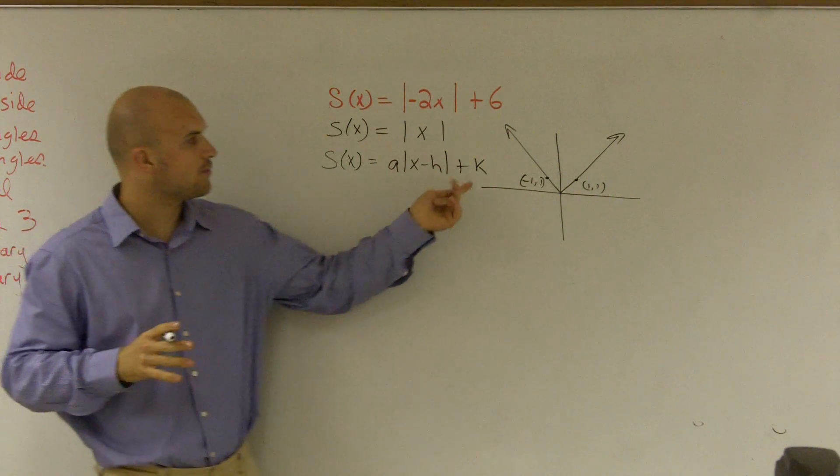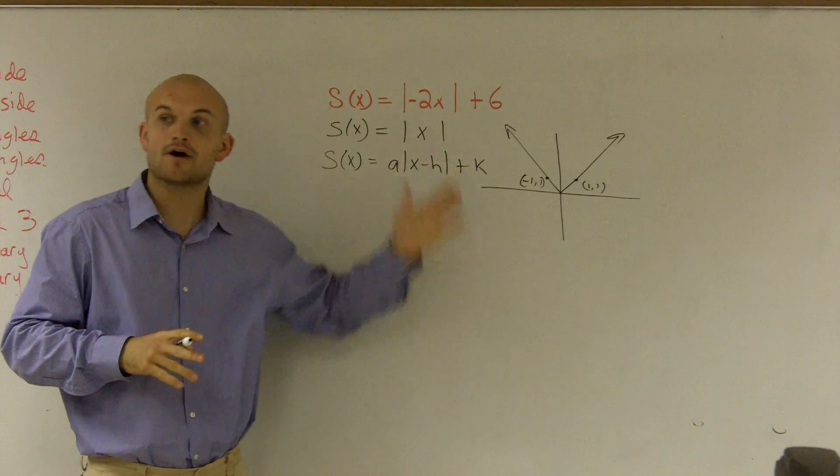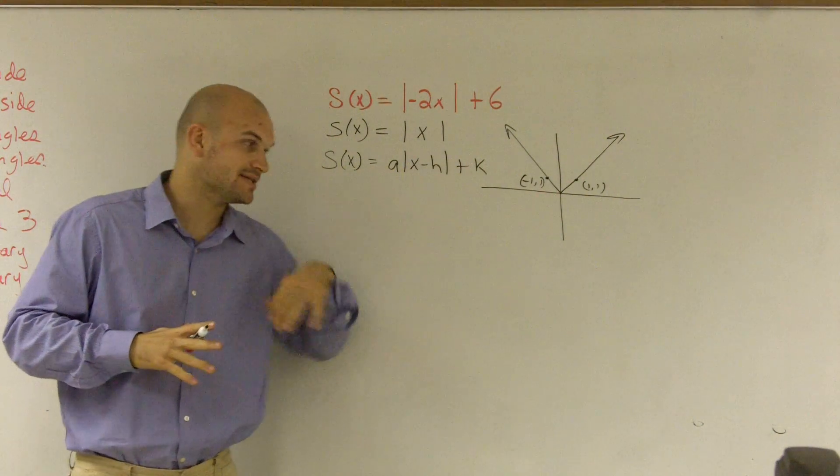what we need to do is we need to look at, well, what is our k doing? Well, our k, remember, shifts our graph up and down, positive being up, negative being down.